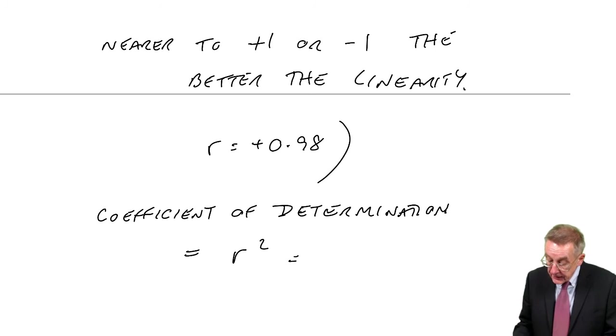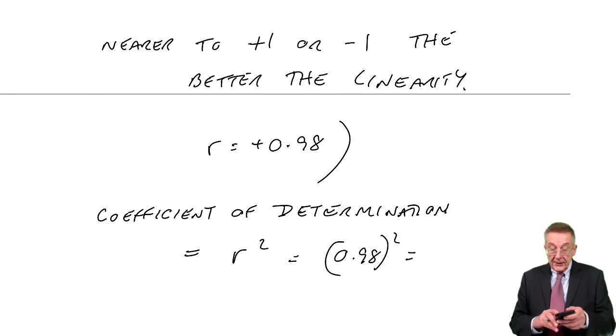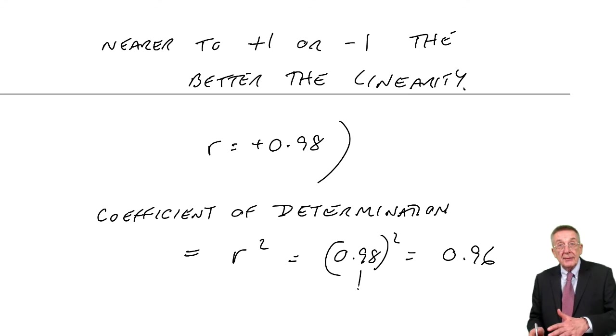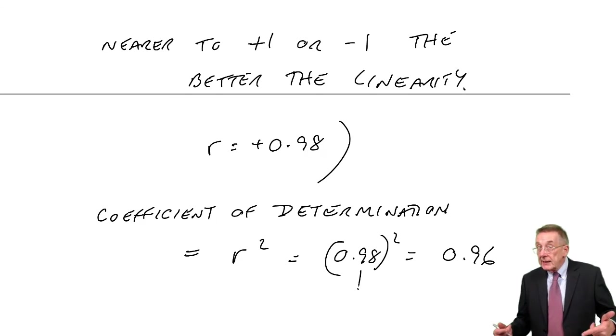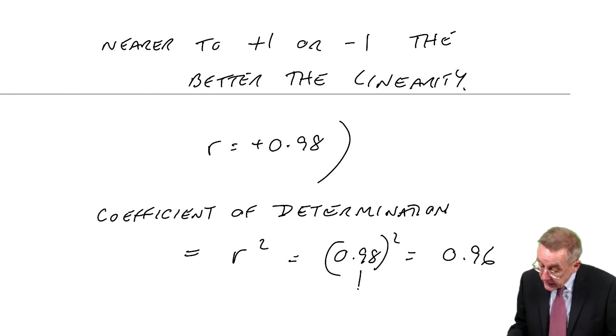And so in our case, 0.98 squared is how much? It's 0.96, which is always positive, because the coefficient of correlation, although this could be positive or negative, when you square a negative number, it becomes positive.